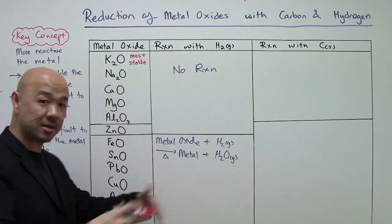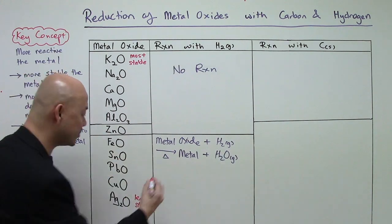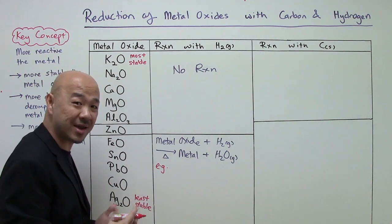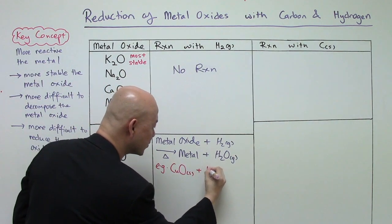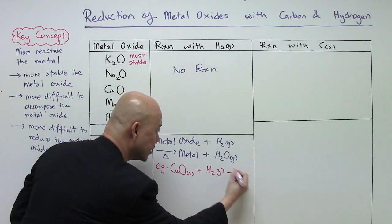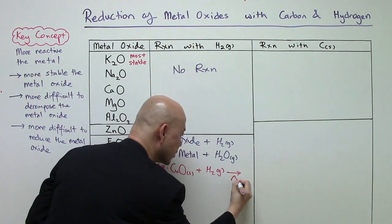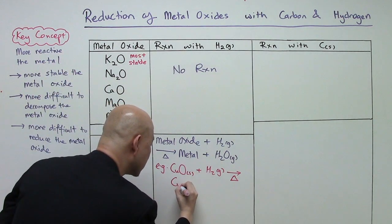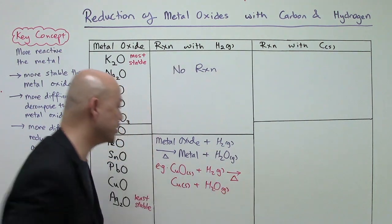Let me give you an example. Copper oxide is commonly tested in exams. Copper oxide with hydrogen gas, when heated, gives you copper metal and H₂O in the gaseous state — steam.